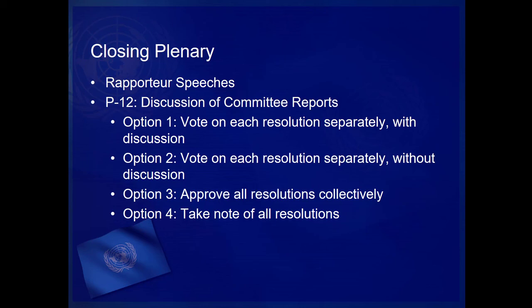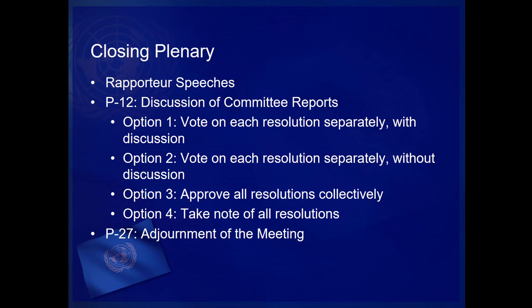Once all committees have reported to the General Assembly and the GA has taken action on the committee reports using P-12, it's time to conclude the session. This is done using P-27, adjournment of the meeting, which is usually passed without objection as the last item of the conference. Once the P-27 is passed, the conference is adjourned and the session is over.